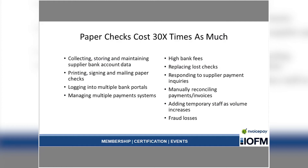The recipient of most of the volume that's moved off paper checks is indeed ACH — automated clearinghouse transactions, similar to how you receive your direct deposit each week. Now, we all know that paying suppliers with paper checks is an expensive affair. Our friends at Nacha tell us that paper checks cost 30 times or more as much as electronic alternatives such as ACH and virtual cards. Think about everything that goes into making those paper check payments: collecting and maintaining supplier information, printing, signing, and mailing checks, logging into multiple bank portals, managing multiple payment systems, high bank fees, replacing lost checks, responding to supplier payment inquiries, reconciling payments and invoices, adding temporary staff as volume increases, and suffering fraud losses.